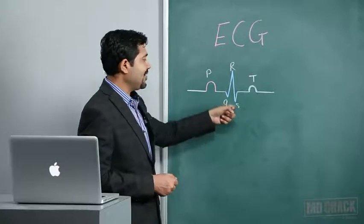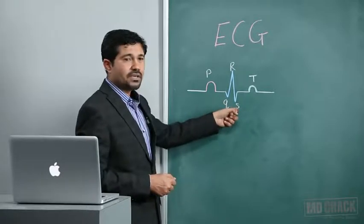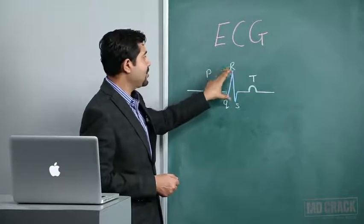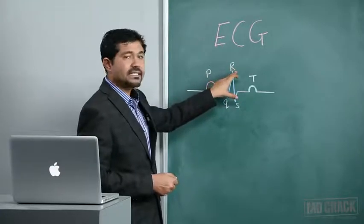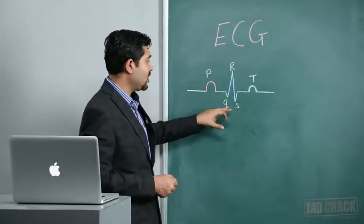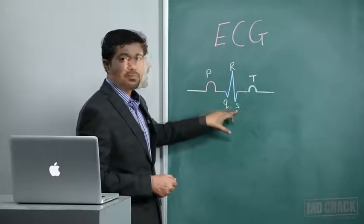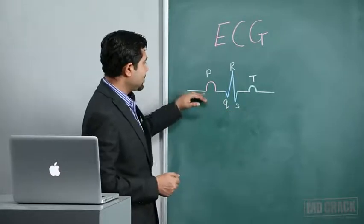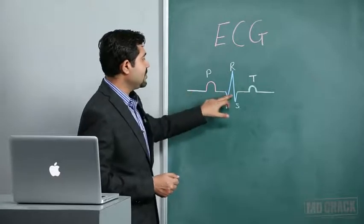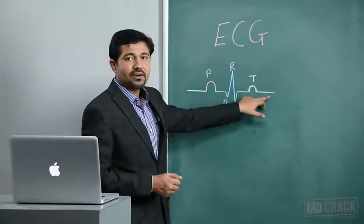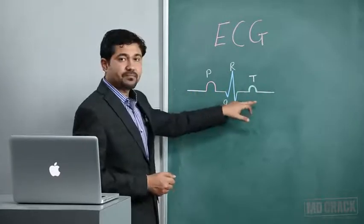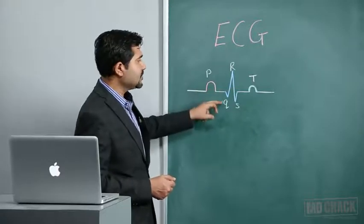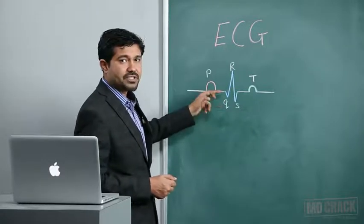When to write capital versus small letters depends upon amplitude - a high amplitude wave is written as a capital letter, whereas a small amplitude wave is written in small letters. The baseline is called the isoelectric line or zero potential line. Waves above the baseline are positive waves and those below are negative waves, denoting voltage.